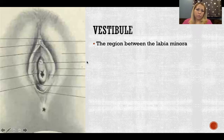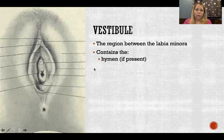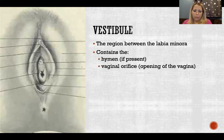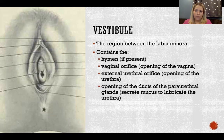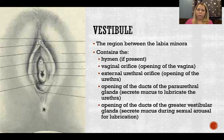The vestibule is the region between the labia minora, and it contains everything in that region. It contains the hymen, if present — a small fold of mucous membrane that could be present a centimeter or two into the opening of the vagina. The vaginal orifice is the proper name for the opening of the vagina. The external urethral orifice is the opening of the urethra. It also contains the openings of the paraurethral glands, which secrete mucus to help lubricate the opening of the urethra, and the greater vestibular ducts, which secrete mucus during sexual arousal for lubrication during intercourse. That is all for this video — thanks so much for watching!